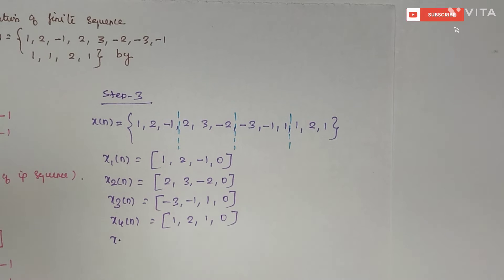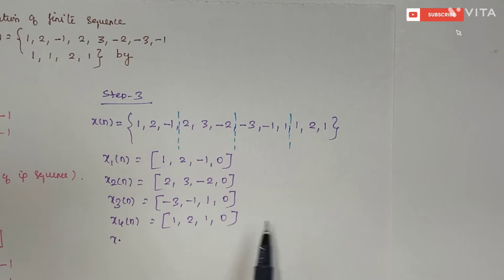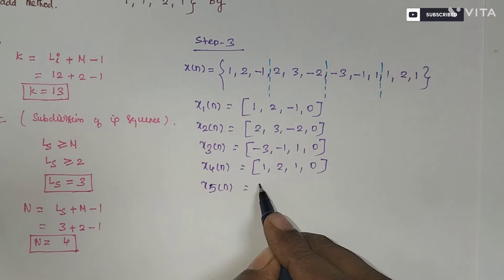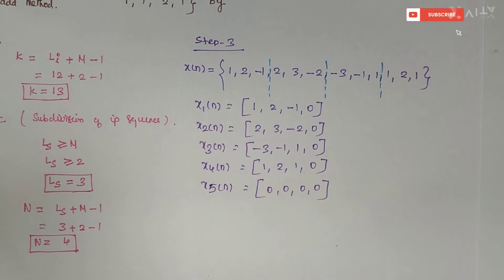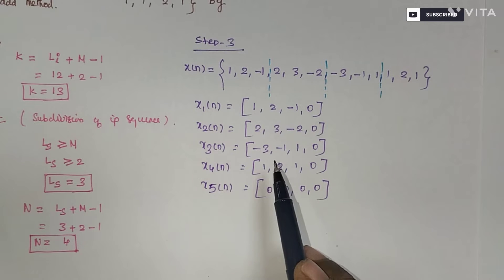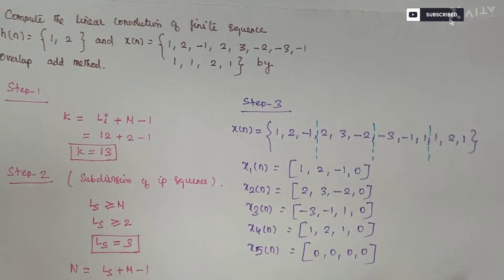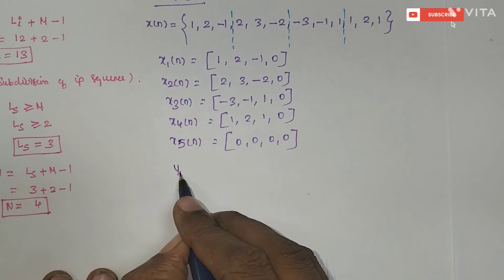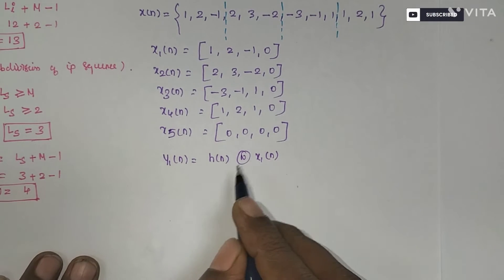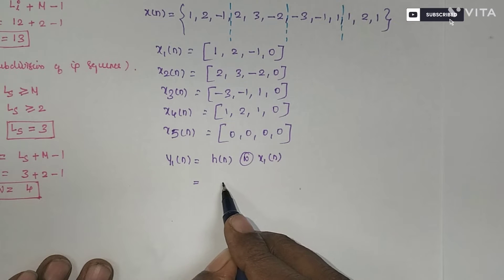When we add one suffix zero term to each sub-block, we get 3, 6, 9, and 12 terms. But the output sequence is of length 13, so we need to include one more sub-block: x5 of n equals 0, 0. After subdividing the input sequence into length-4 sub-sequences, we perform circular convolution with each sub-sequence and the impulse response h of n. The impulse response is arranged as a 4x4 circular matrix.